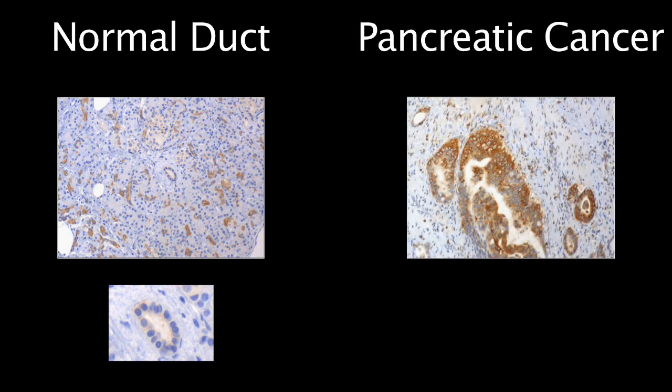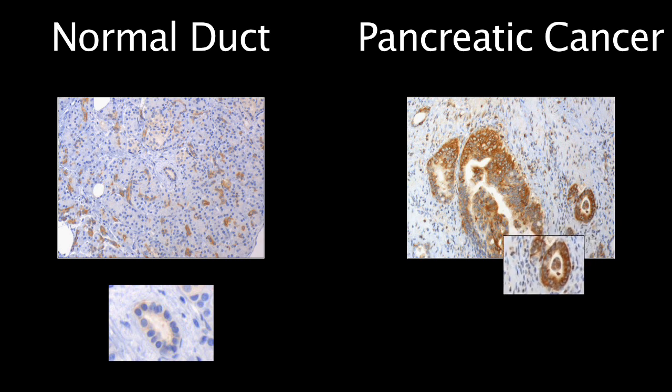In a normal healthy pancreas, there's very little of the protein present. But if we look at a cancerous pancreas, we find that much more of the protein is present even in the earliest stages of cancer.